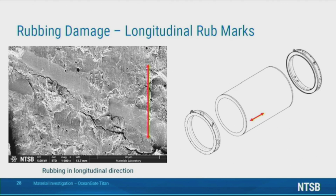They're more consistent with fracture faces that are rubbing against one another, and that motion creating those features. So in your experience with fracture analysis at the NTSB, this would not be indicative of a catastrophic failure with no pre-movement?